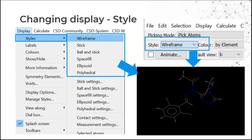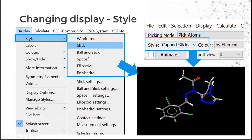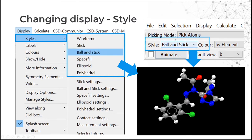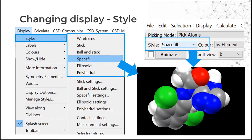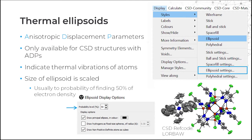There are a number of different display options in Mercury. To see these, go to the Display menu and then Style. You can select wireframe, or use the Style dropdown in the toolbar. Other style options include capped sticks, ball and stick, and space fill. There is also an ellipsoid option, which shows the anisotropic displacement parameters — these are available for CSD structures or your own structures with ADPs, and they indicate the thermal vibrations of the atom. They typically appear as rugby ball shapes.